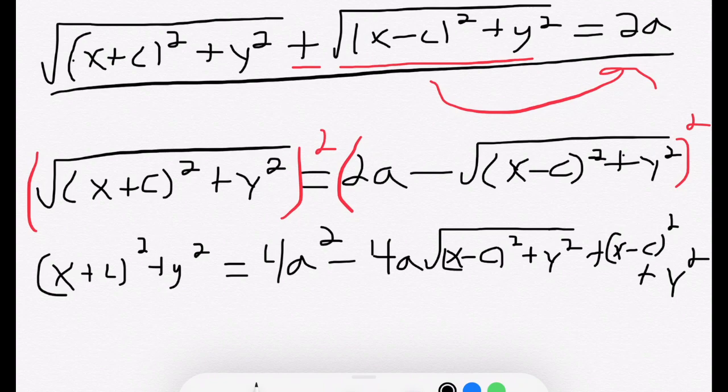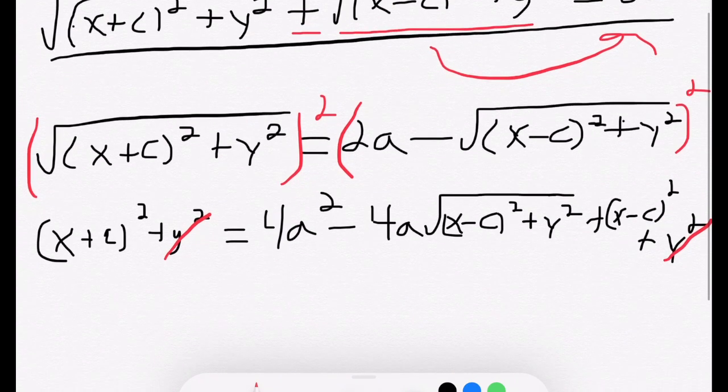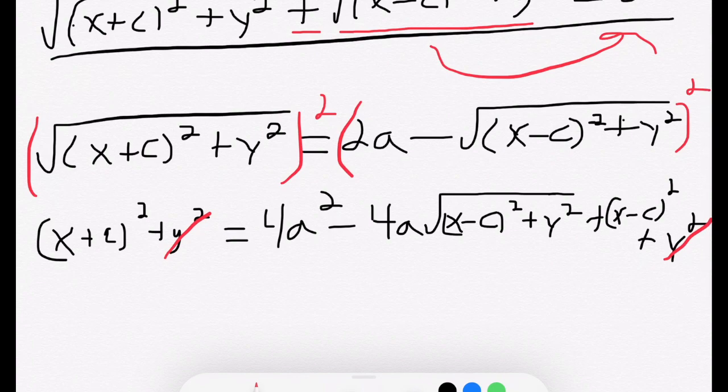We haven't made a ton of progress yet, but we actually are able to cancel out two terms already. The y squareds cancel out. And if we continue, we can move all the non-square root terms to one side again, and square both sides.